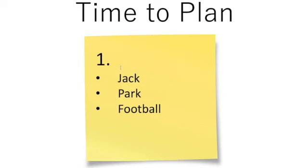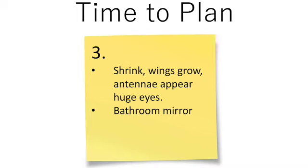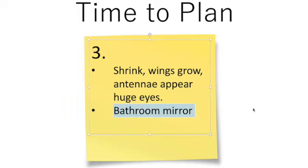In your book you've got that key information. For the setting, remember it's almost impossible to have all of these things, so you should have at least three senses of wherever they are. And then you should have some notes on the transformation — the model I gave was about turning into a butterfly. Is your character shrinking or growing? What happens to their body? Do they grow wings, a tail, fur, scales, a shell, flippers? And then where do they see their reflection?